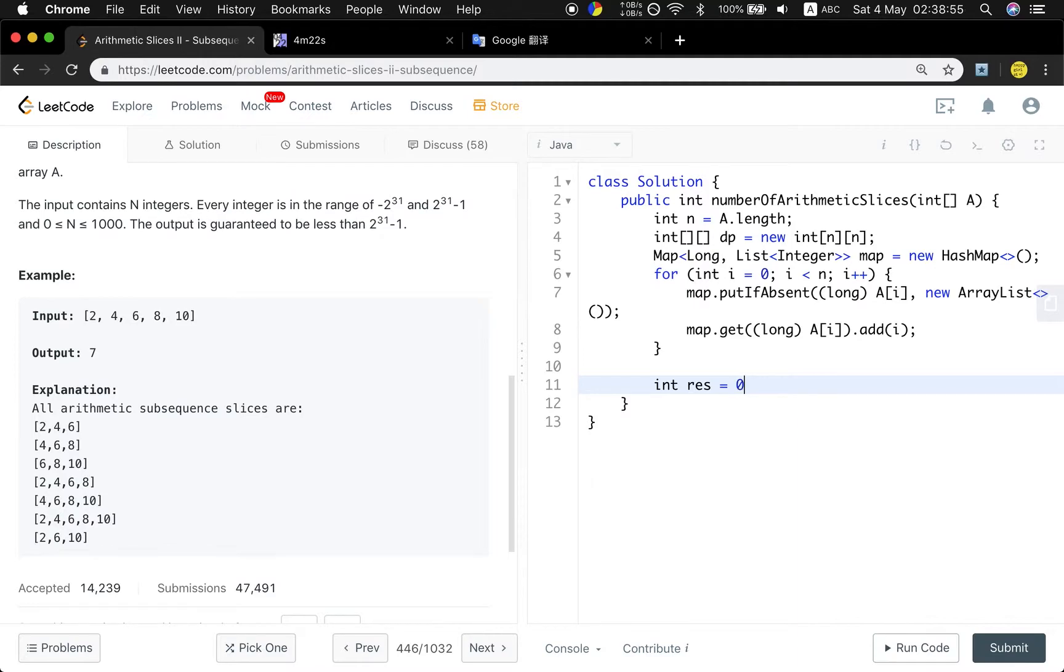We need the result, which is the total number of the arithmetic subsequence slices. So for int i equals 0, i less than n, i++. This i means the third element. j++. So now we will get the target number. The target number should be 2 times a[j] minus a[i]. This is the first element we need.